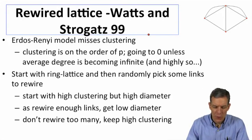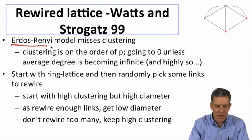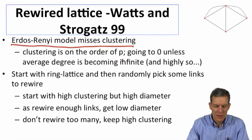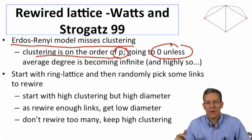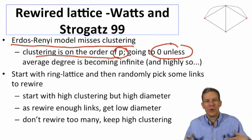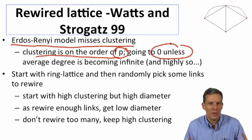One important observation is that the Erdash-Renny model misses clustering because the clustering is on the order of p, which is going to have to go to zero unless the average degree is becoming very, very large. If it's billions of people in the world, it's not as if we each have billions of neighbors.